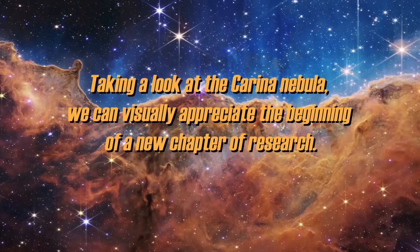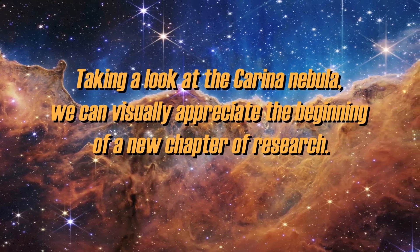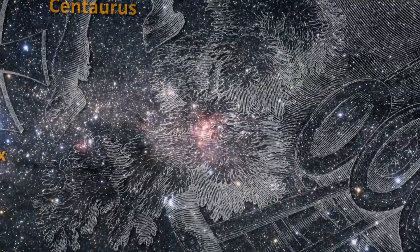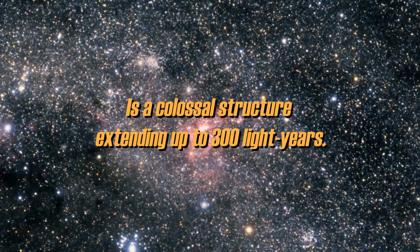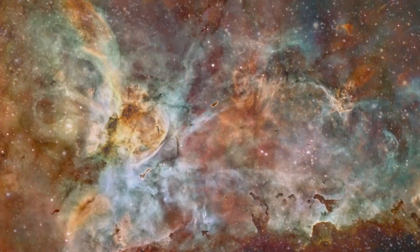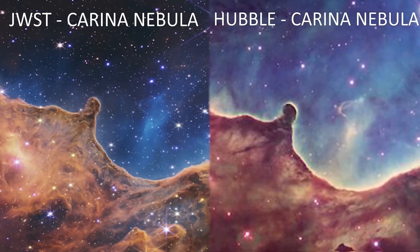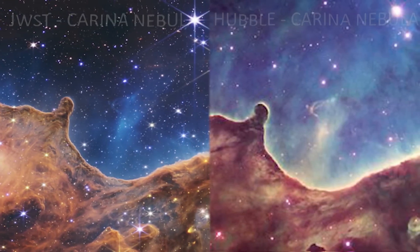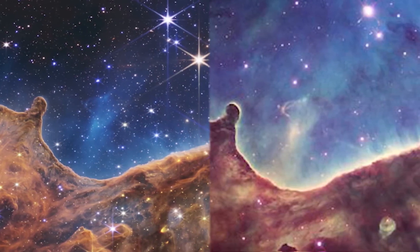Taking a look at the Carina Nebula, we can visually appreciate the beginning of a new chapter of research. This nebula, located in the constellation Carina, about 9,000 light-years away, is a colossal structure extending up to 300 light-years. The Carina Nebula represents one of the most significant stellar cradles of our Milky Way galaxy. However, by comparing the images captured by Hubble and the James Webb telescope, we can discover how many bright secrets were hidden behind the dense clouds of gas and dust.